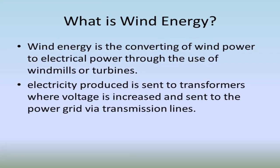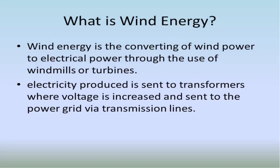The electricity produced by windmills is sent to transformers where the voltage is increased, and then sent to the power grid via transmission lines. Wind energy is where winds are used to generate electricity.